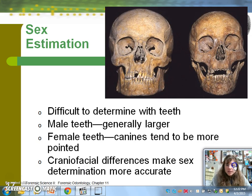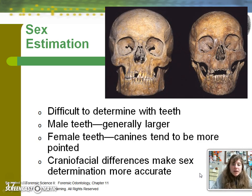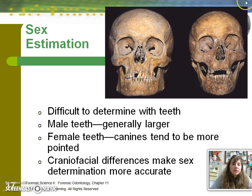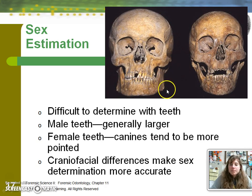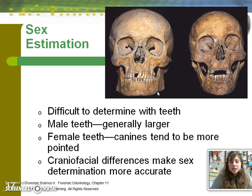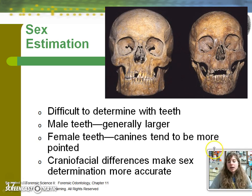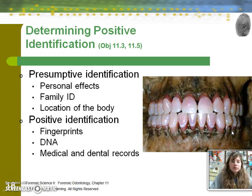When estimating male versus female from teeth, it's tough. The skull is more useful. On the left is a male, with a square-shaped skull, square-shaped orbits, and a more broad jawline. For the female, males tend to have larger teeth and females tend to have pointier canines, but it's a little tough to make those calls for sure.